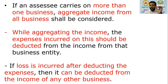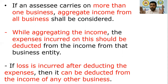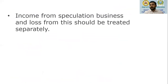For example, if doing four businesses: business one has a profit of 10,000; business two has a loss of 5,000; business three has a profit of 20,000; business four has a profit of 30,000. The total profit is 60,000 minus the loss of 5,000, giving an aggregate business income of 55,000. So losses from one business can be deducted from the income of other businesses.